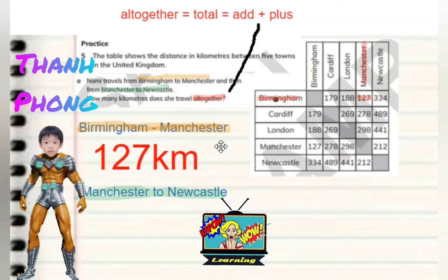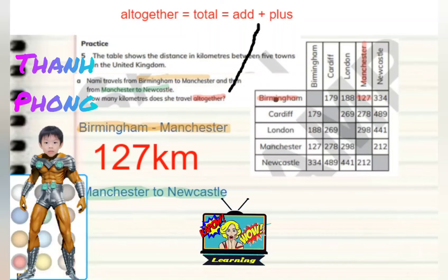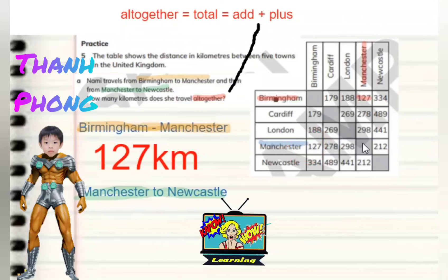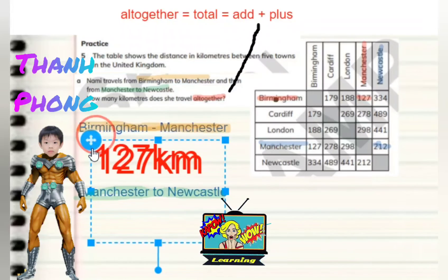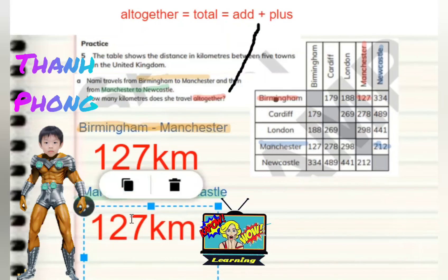And how far is it from Manchester to Newcastle? Manchester to Newcastle — we've got Manchester here. 212. So Manchester to Newcastle is 212. Right, so now we've found those two values, Tang Fong — 212.